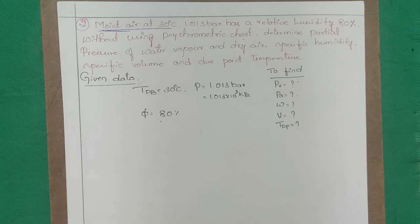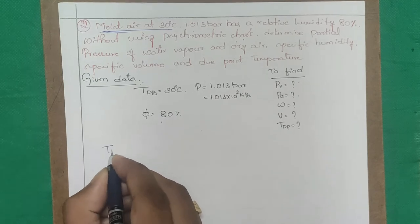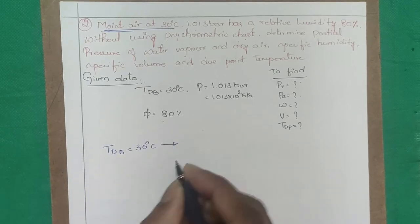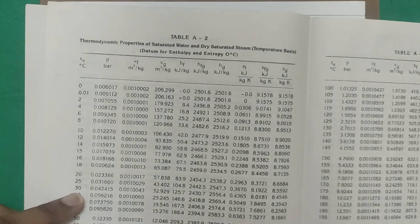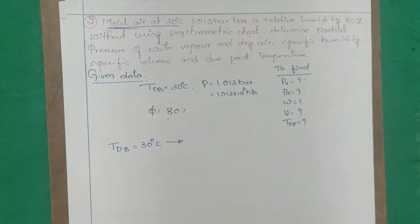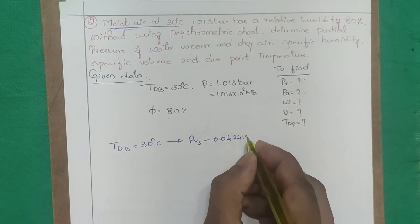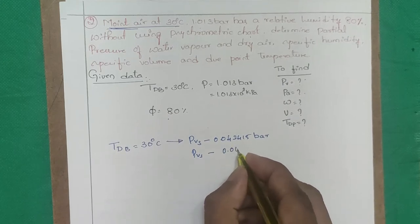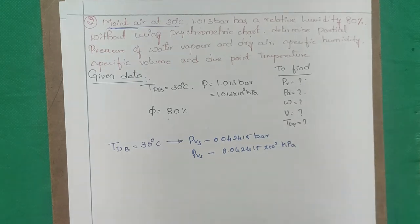From the steam table at Tdb = 30°C: PVS = 0.042415 bar = 0.042415 × 10² kPa = 4.2415 kPa.